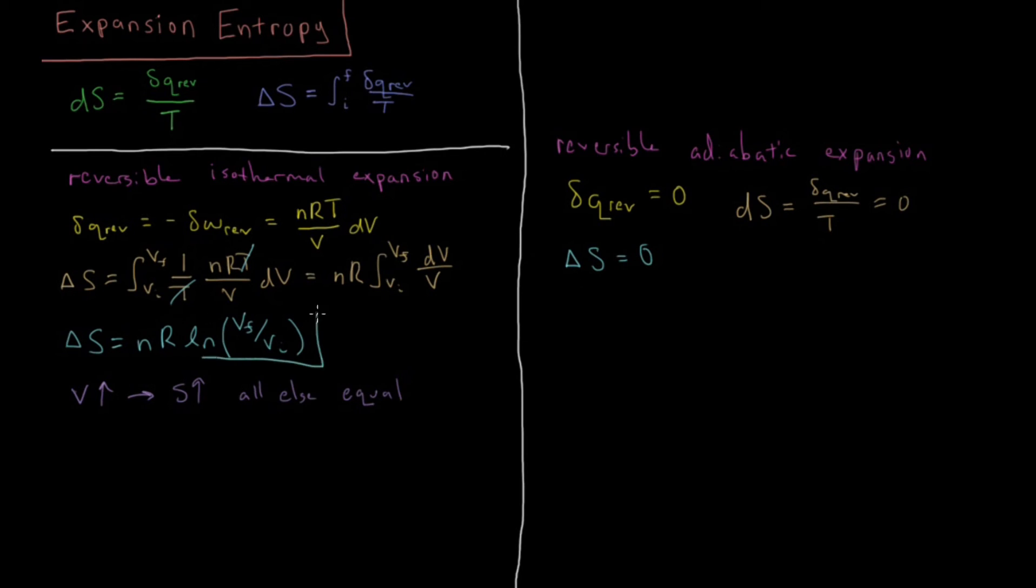So why this difference? Why do we get a change in entropy for the isothermal case, but we do not get any change in entropy for the adiabatic case?